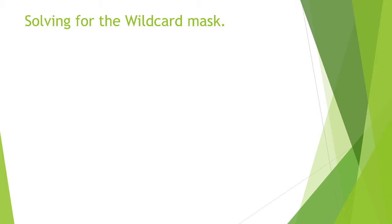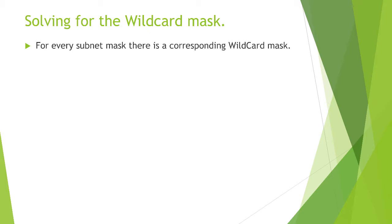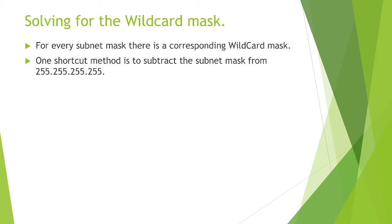Whenever we need to solve for the wildcard mask, we're still using binary, just like we did with the subnet mask. For every subnet mask there is a corresponding wildcard mask. One shortcut method to determine the wildcard mask is to subtract the subnet mask from the value of 255.255.255.255. All that means is that every bit value is turned on in each octet, because we know 128+64+32+16+8+4+2+1 equals 255.